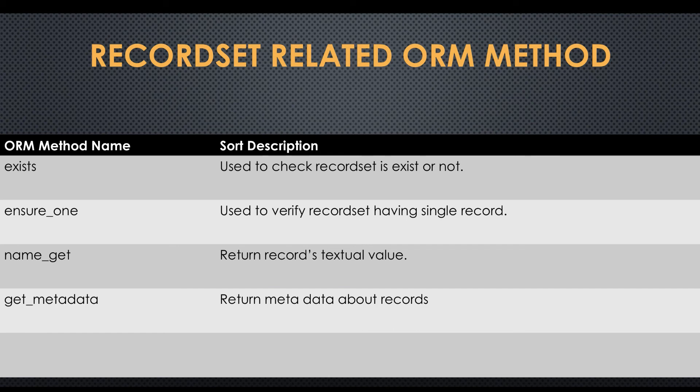In this screen you can see record set related methods. The first method is exists — this method is used to check whether a record set exists or not. The second method is ensure_one — this method helps to check if a record set has a single record. The third method is name_get — this method returns the textual value from a record set. The fourth method is get_metadata — this method helps to get metadata about records.